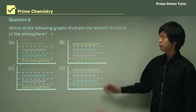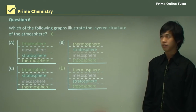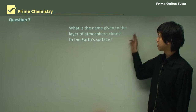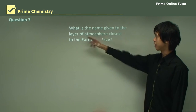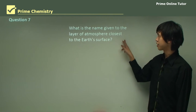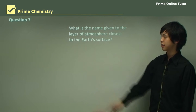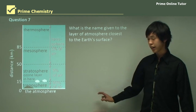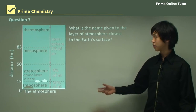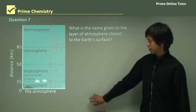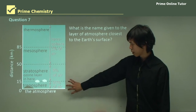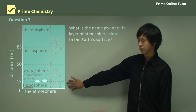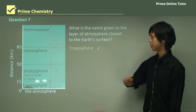Question seven asks: what is the name given to the layer of the atmosphere closest to the Earth's surface? Looking at the diagram, the troposphere is at the bottom and the thermosphere is at the top, so the answer is the troposphere.